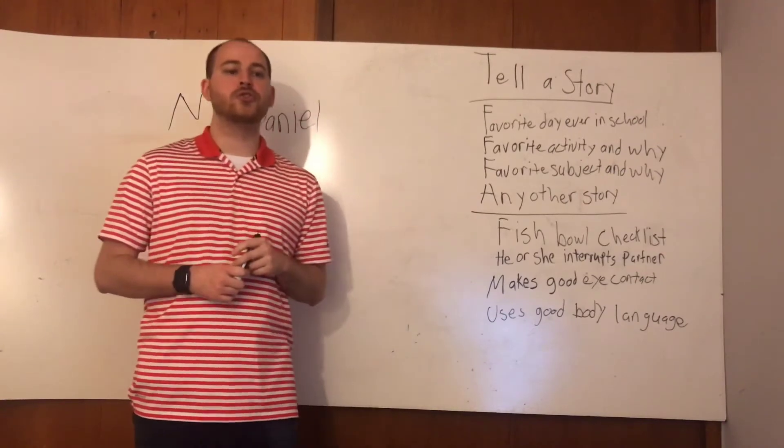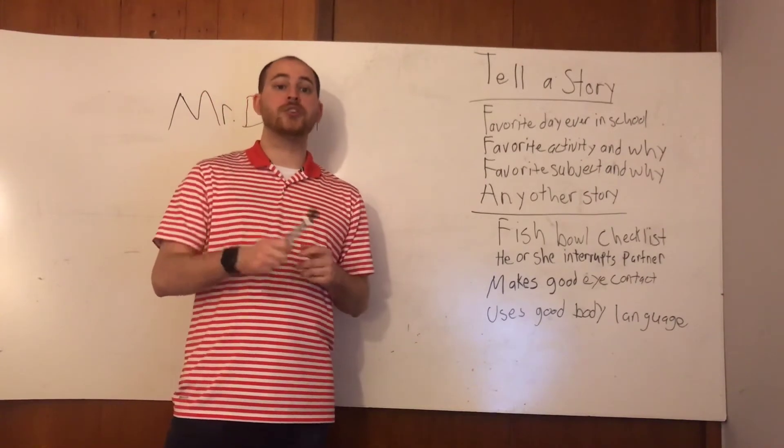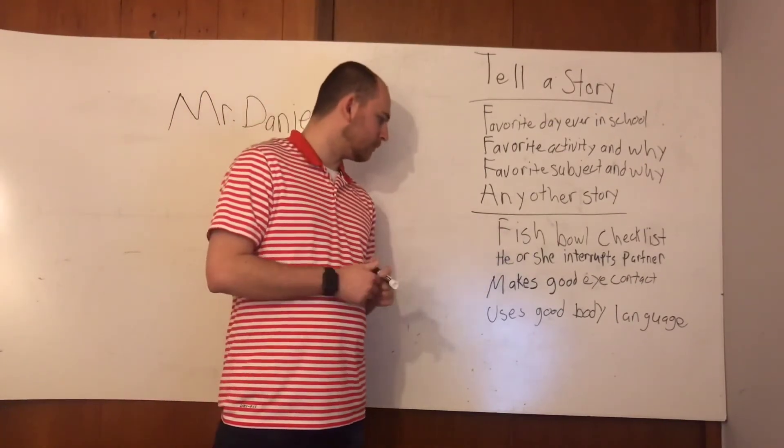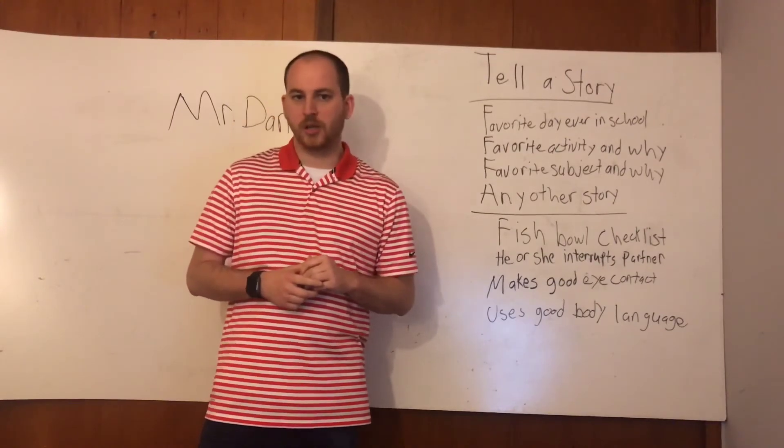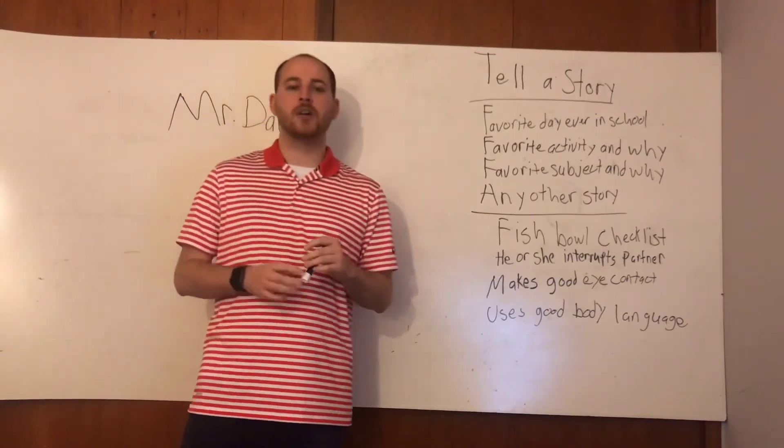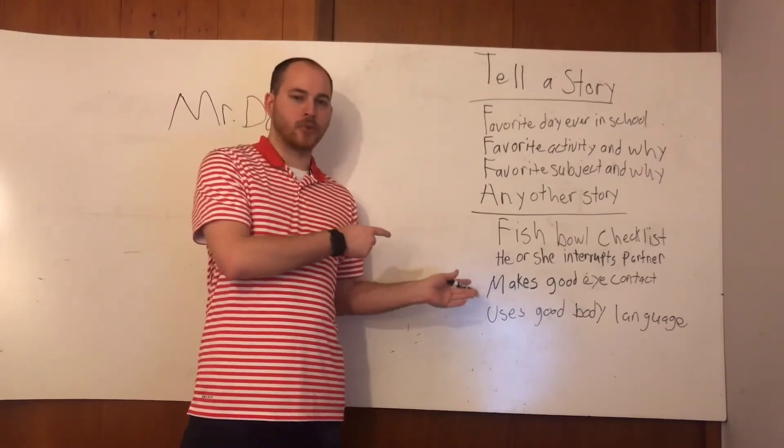What you are going to do is turn to your Fishbowl checklist page, and you are going to check each time your partner interrupts you, makes good eye contact, or uses good body language. For those of you that do not have a Fishbowl checklist page, we have it on the board for you.